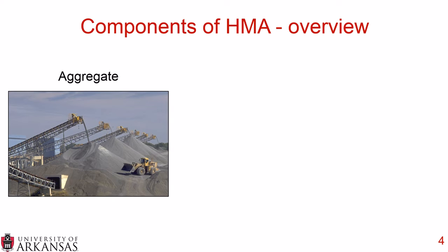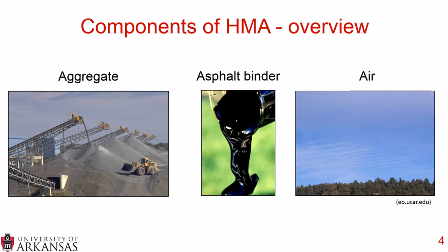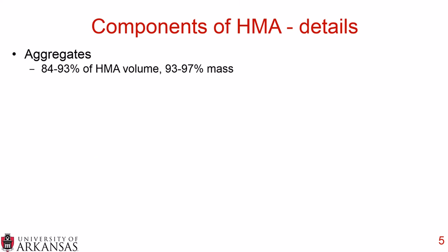To begin with the components of hot mix asphalt, you begin with the aggregate. You generally take various different types of aggregate, you dry it, you heat it, and you mix it with asphalt binder. There is a third component of HMA which is absolutely critical to the success of their performance, and that is air. Aggregates take up anywhere from approximately 84% to 93% of the volume of hot mix asphalt, and anywhere between 93% and 97% of the mass, and this does vary based on the type of hot mix asphalt you're placing.